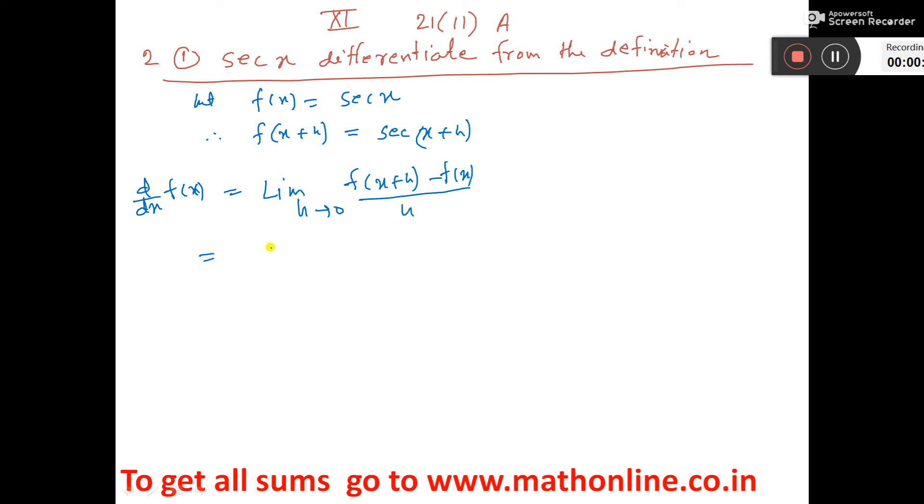So, this is limit x tends to 0, sec(x + x) minus sec x divided by x. Now, sec means 1 by cos, then do LCM. See, here I have done sec to cos and I have taken LCM. So, cos x minus cos(x + x).